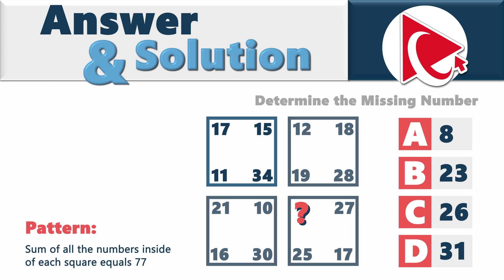Let's look at the example. In the first square, if we add up 17, 15, 11, and 34, the end result of this is 77.